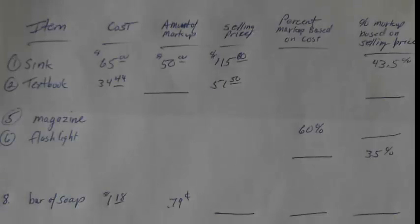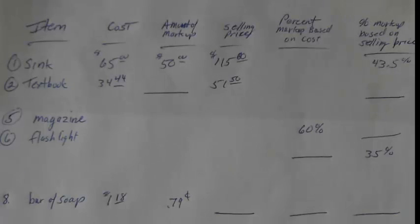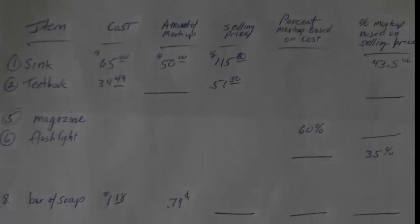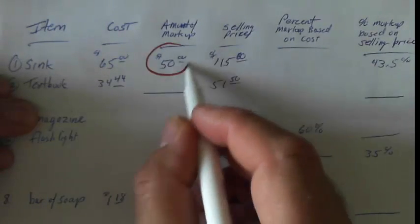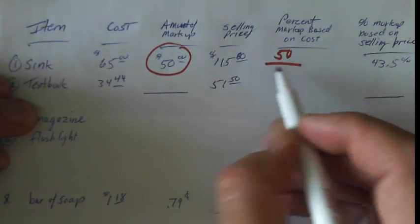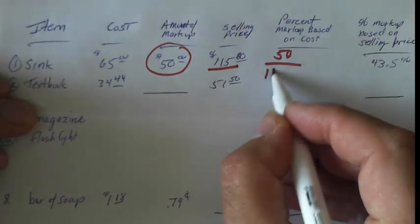This is Chapter 8, Section 2, continuing our discussion of markup costs and determining the percentage. Number 1 has a cost of a sink of $65, the markup is $50, and the selling price is $115. The percentage markup based on the selling price is 43.5%. The markup is that difference — $50 — and we base it on selling price, so we use $115.